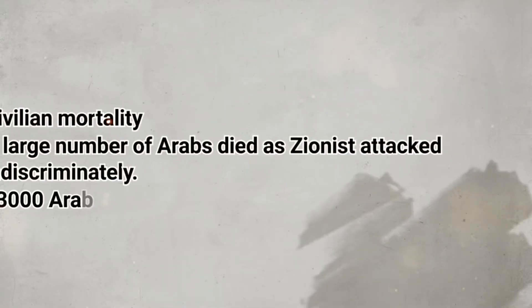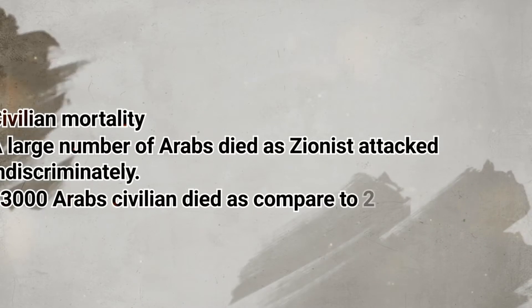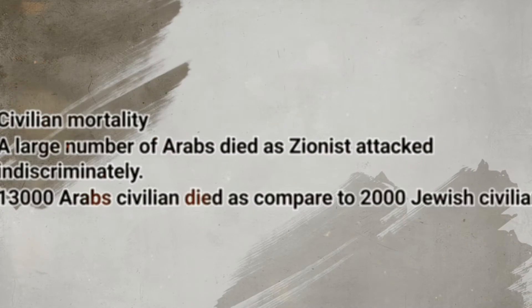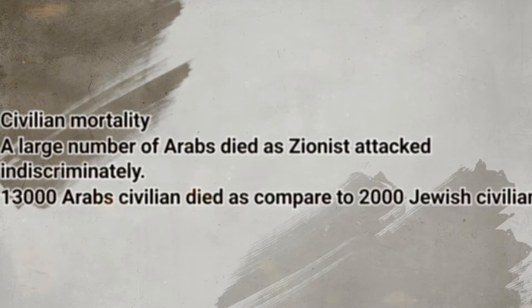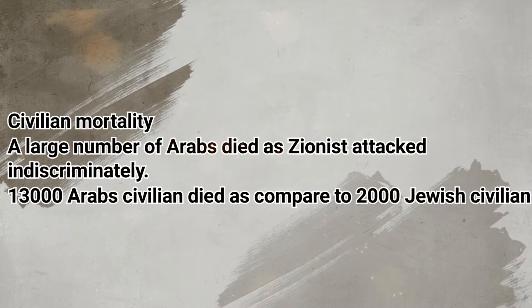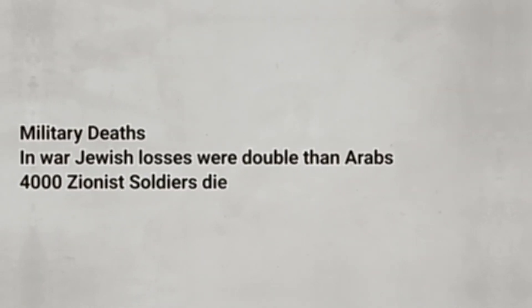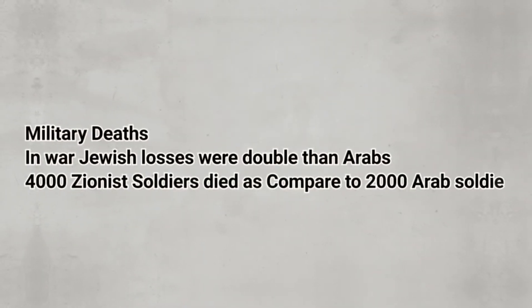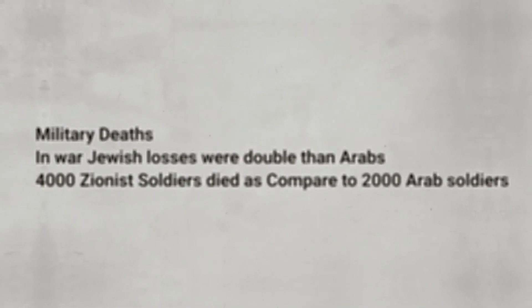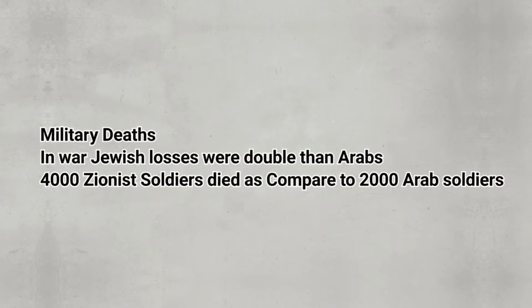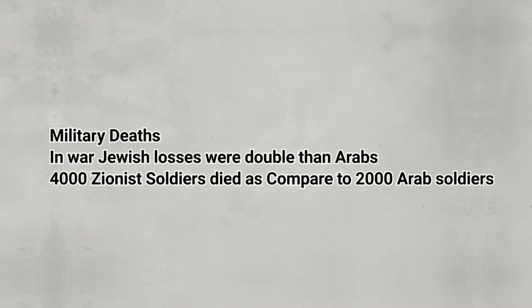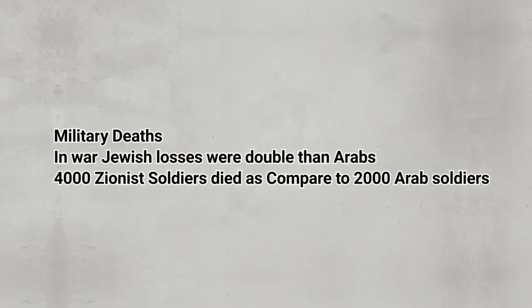A large number of Arab civilians died as Zionist forces attacked indiscriminately. 13,000 Arab civilians died compared to 2,000 Jewish civilians. In terms of military losses, Jewish military deaths were double those of Arabs — 4,000 Zionist soldiers died compared to 2,000 Arab soldiers.